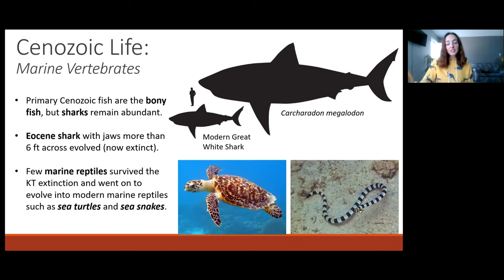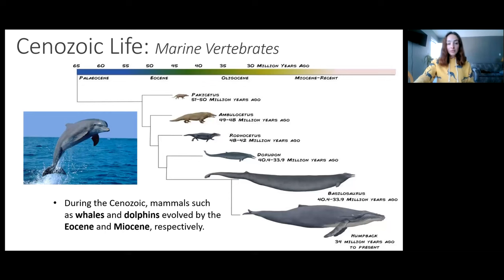Regarding marine reptiles, we talked in the Mesozoic about marine reptiles that resemble today's marine mammals. However, after the K-T extinction, only a few marine reptiles had survived, and these went on to become things we know in the modern day as sea turtles and sea snakes. Therefore, the niche that had been filled by Mesozoic marine reptiles could now be filled by marine mammals. And it's just kind of crazy to think that mammals had evolved from fish that had learned to walk on land and become tetrapods, and then millions of years later, mammals that had become primed to walk on land decided to go back into the ocean and become marine mammals.